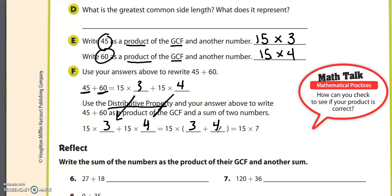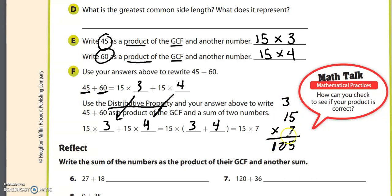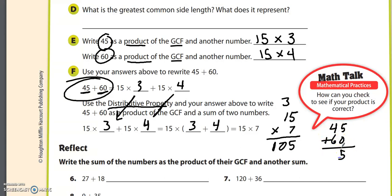You end up getting 15 times 7. What's interesting is that 15 times 7 gives you the same thing as 45 plus 60. 7 times 5 is 35, and 7 times 1 is 7 plus 3 is 10, so you get 105. And 45 plus 60: 5 plus 0 is 5, and 4 plus 6 is 10, so that's also 105. These two things are equal.